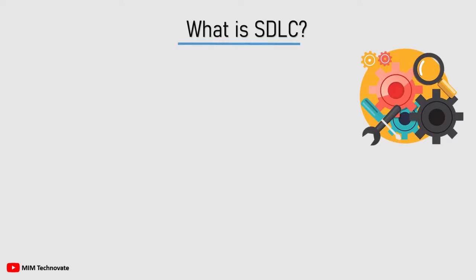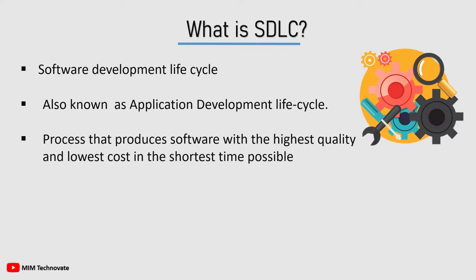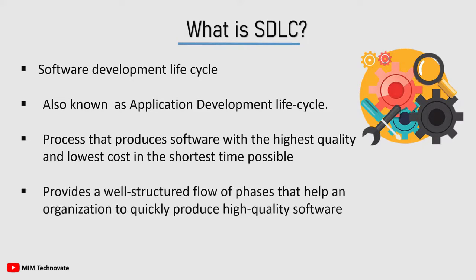SDLC and its Phases. SDLC stands for Software Development Life Cycle and is also known as the Application Development Life Cycle. SDLC is a process that produces software with the highest quality and lowest cost in the shortest time possible. SDLC provides a well-structured flow of phases that help an organization to quickly produce high-quality software which is well-tested and ready for production use.